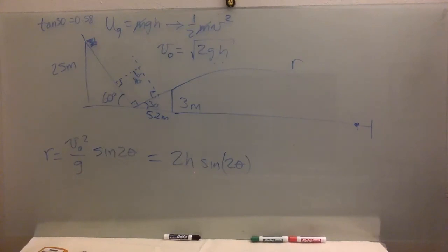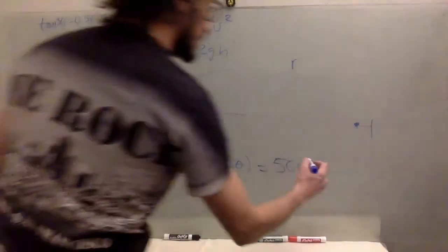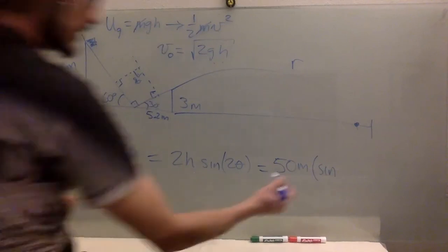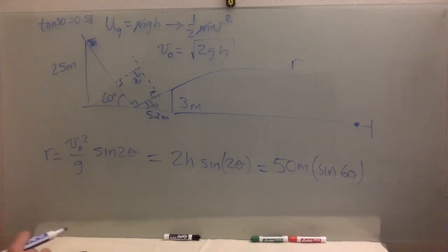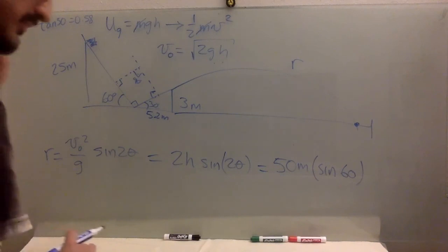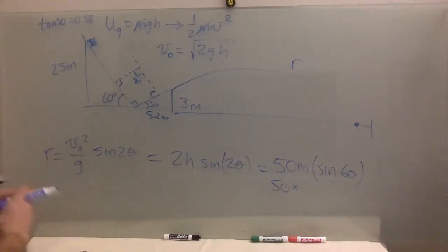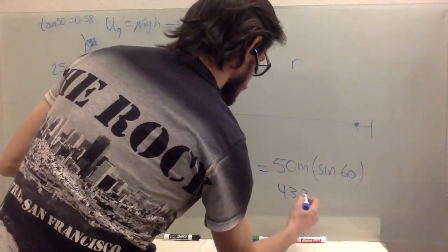So, this is 50 meters. Sine, so theta is 30 degrees, two theta is 60. We should know that one, as I said before, but okay, so that's 50 times 0.866. It's 43.3 meters. Hmm.